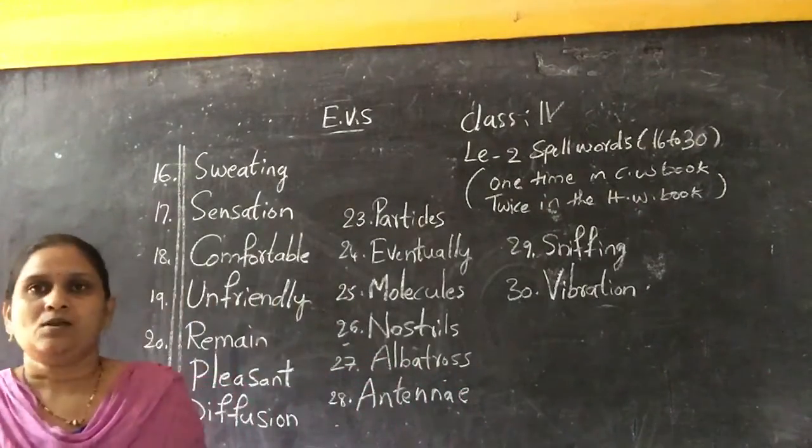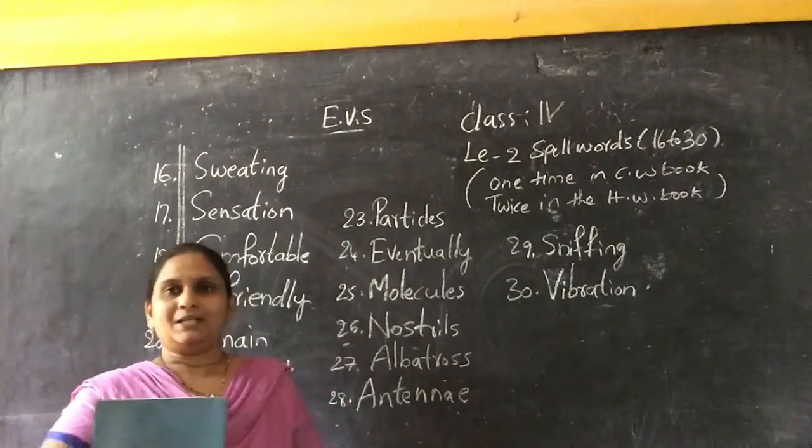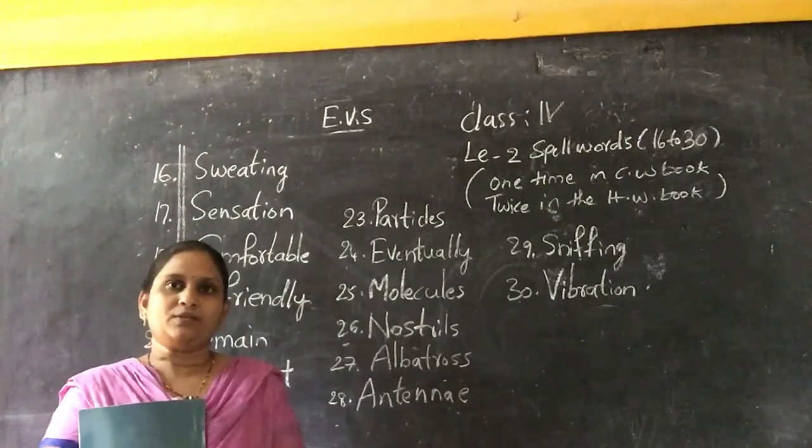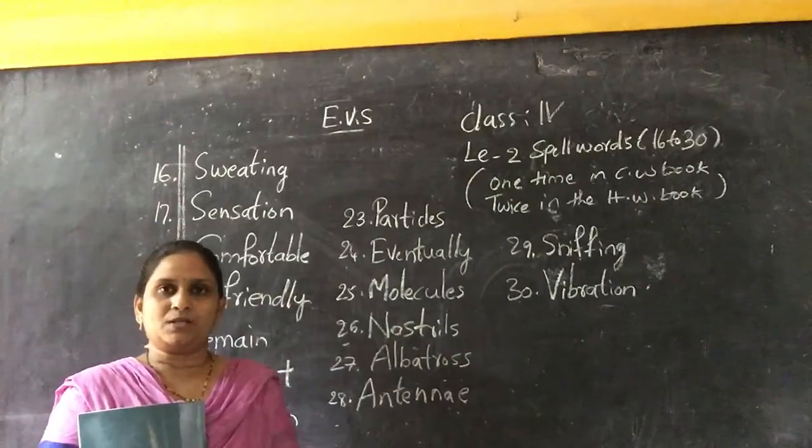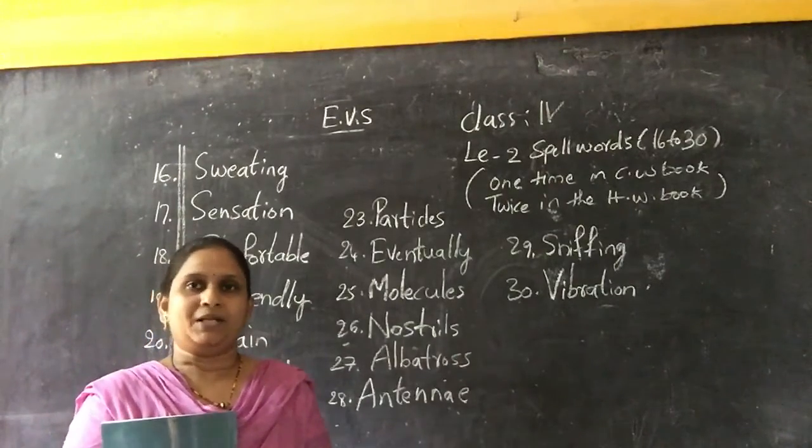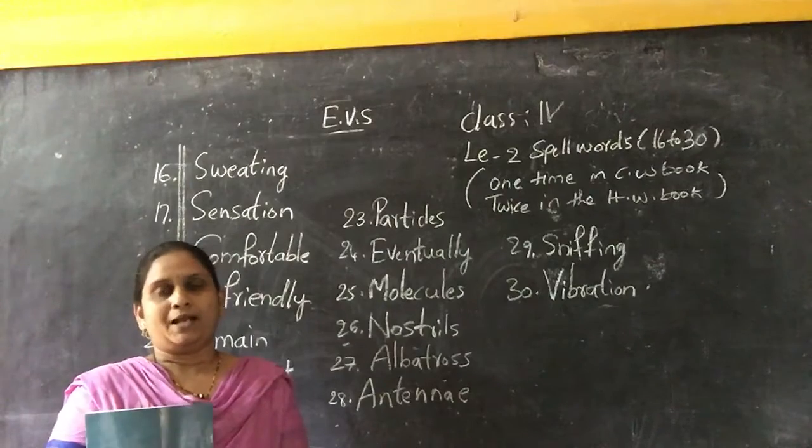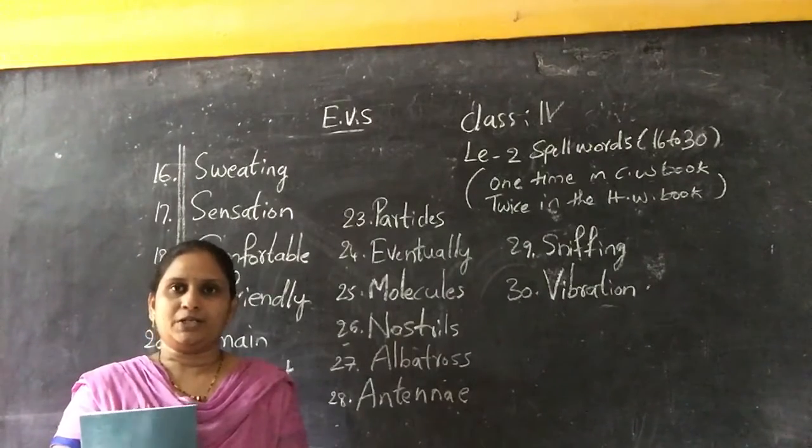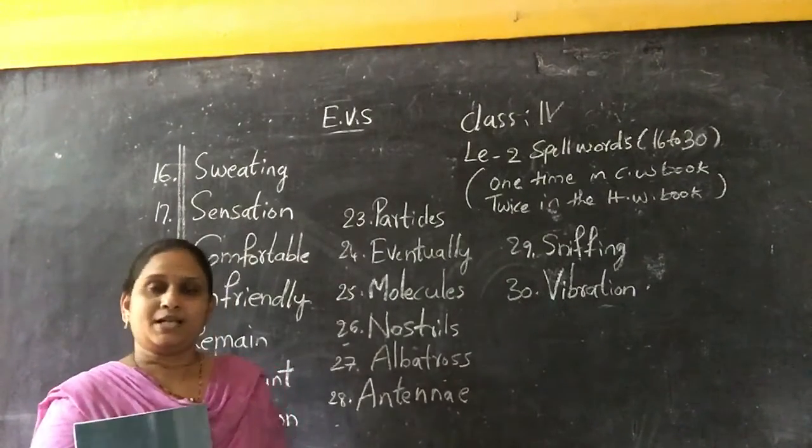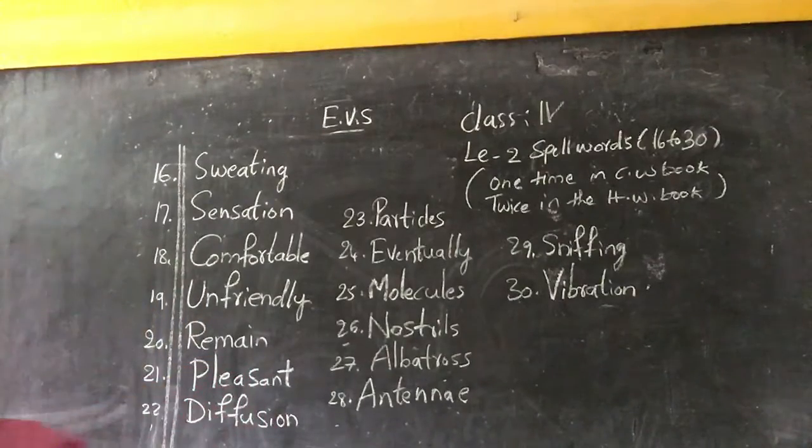Okay, so like this, spell words 16 to 30 are completed. You now have spell words 1 to 30 completed in the classwork. Everyone, write one time in the classwork and each word two times in the homework. At the next class, we will continue with our question and answers. Thank you.